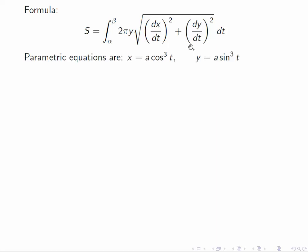So let's look at what that is. Well, the parametric equations are a cosine cube t, a sine cube t. So the derivatives are minus 3a cosine squared sine t, and 3a sine squared cosine t.